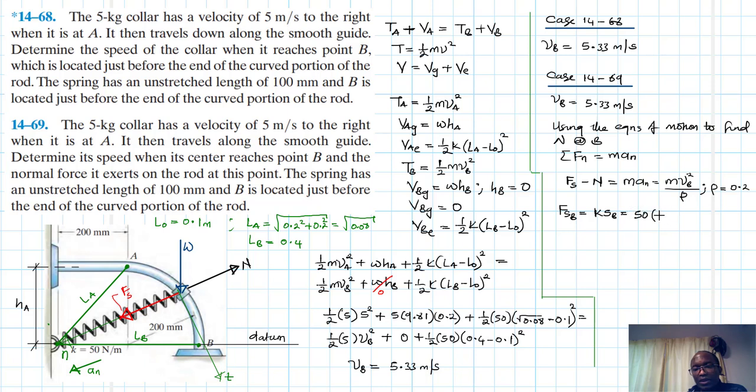So let's find the value of FS at B. FS_B is just equal to k times s_B, and this is just equal to 50, the stiffness, and s_B is just equal to 0.4 minus 0.1. And if you work this out, that's just 50 by 0.3, and this is 15 Newtons. Therefore we have 15 minus N equals M VB squared over rho, so M is just 5, and then we have VB which is just 5.33 squared divided by 0.2.